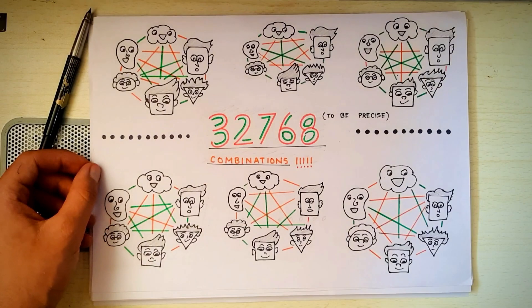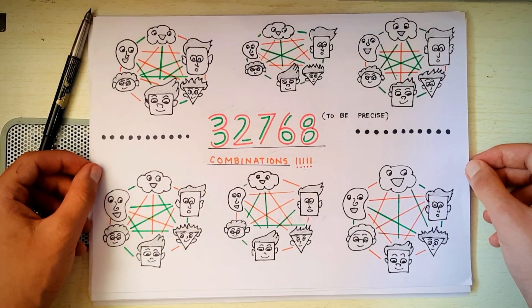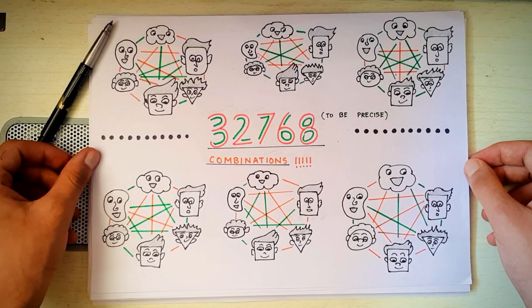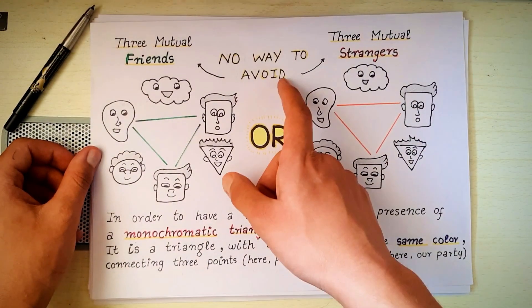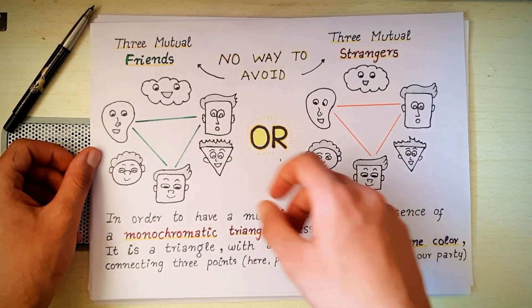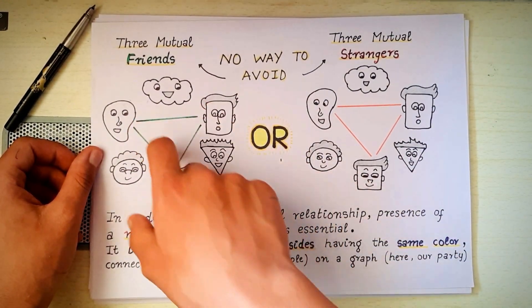Out of the thousands of graphs made by changing the color pattern, there is absolutely no way of avoiding having a group of at least 3 mutual friends or 3 mutual strangers.